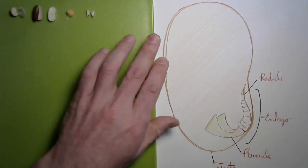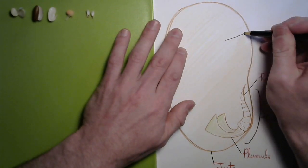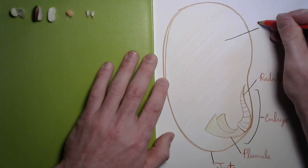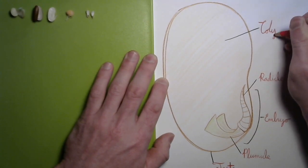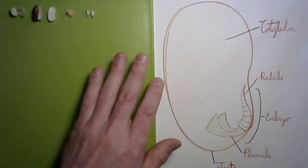We said that this is called the cotyledon. So let's label it. Cotyledon comes from a very old Greek word, which means cup. There we are.